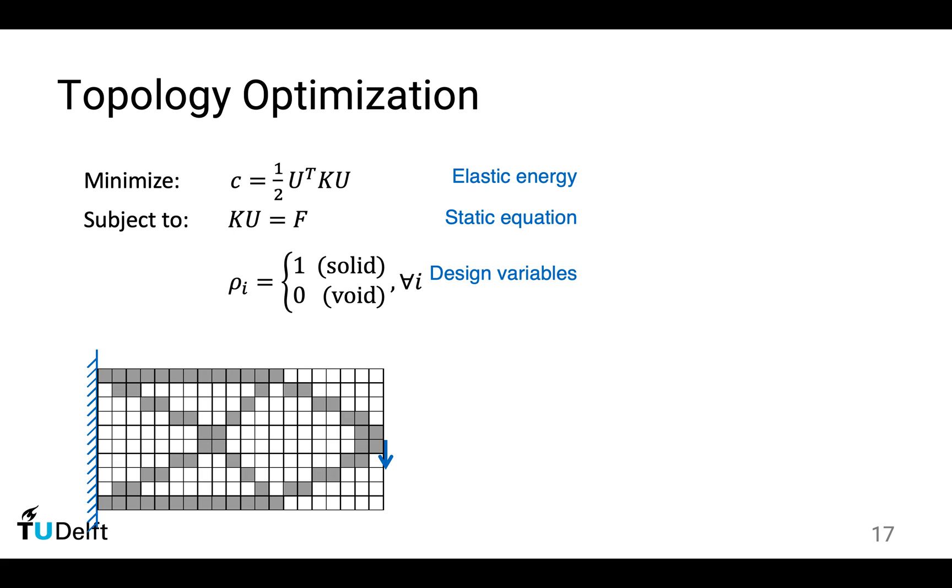This is an optimization problem dealing with 0s and 1s, which is mathematically difficult to solve. So we relax this problem to allow a continuous change of this design variable. You couldn't really place half a block, but mathematically, we allow a continuous change of density or pseudo density.